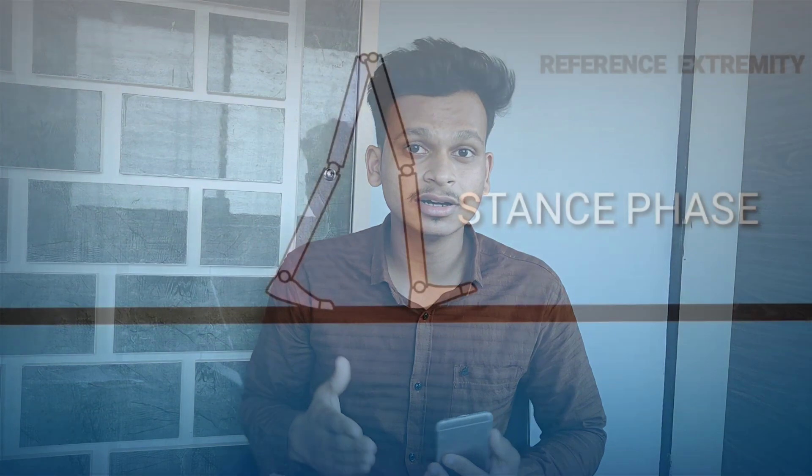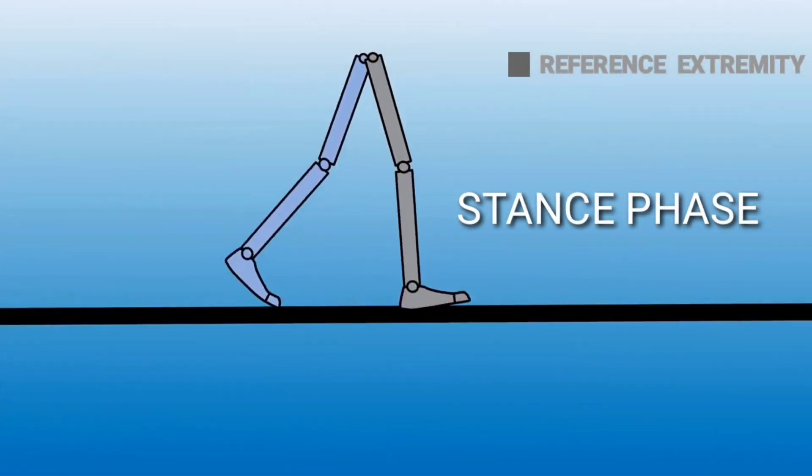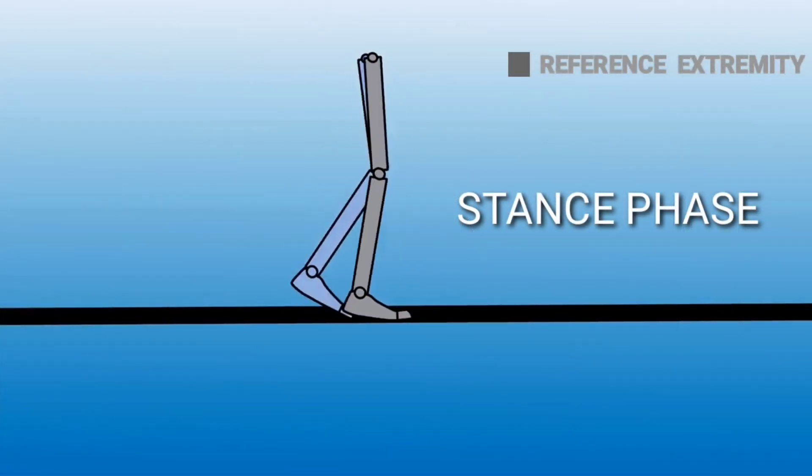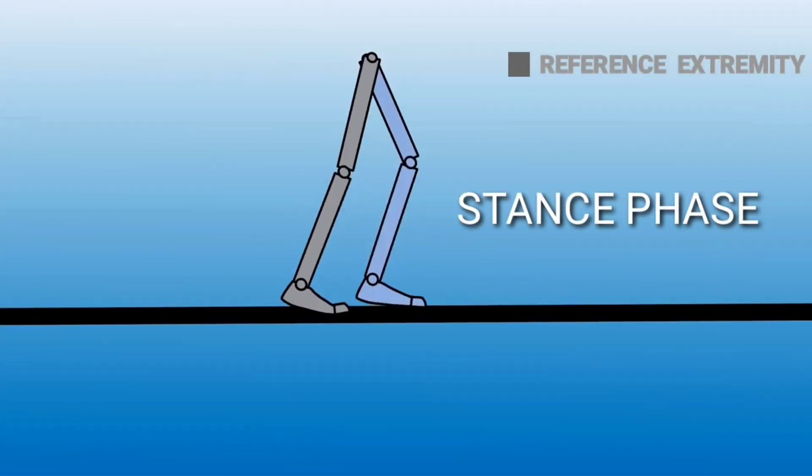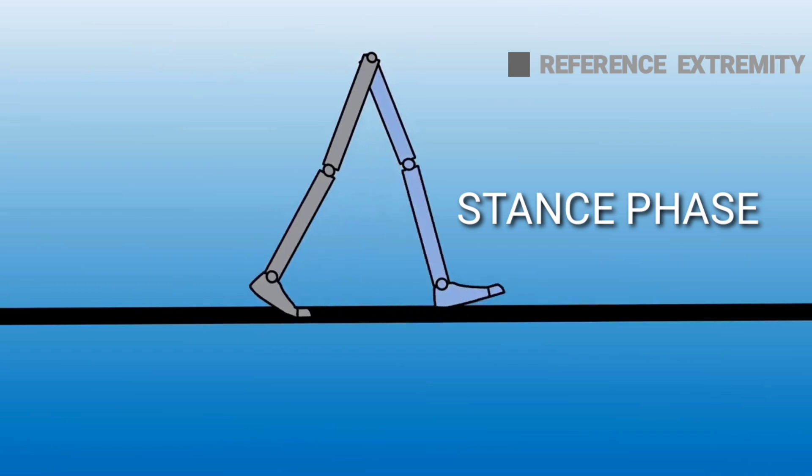Stance phase: when the reference extremity is in contact with the ground, it is said to be in the stance phase. For example, if we take our right lower extremity as our reference extremity, it is in the stance phase when it is in contact with the ground. This stance phase comprises about 60 percent of the gait cycle.